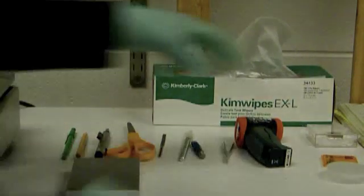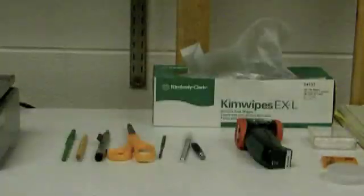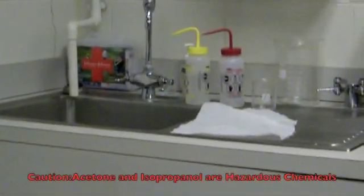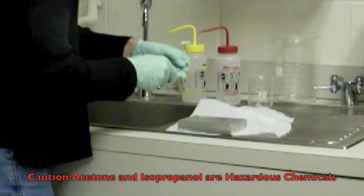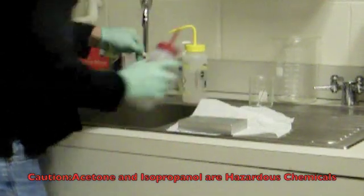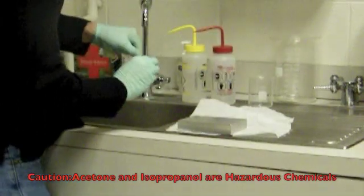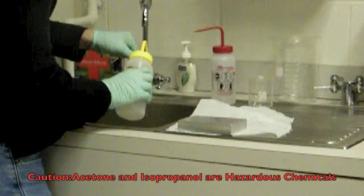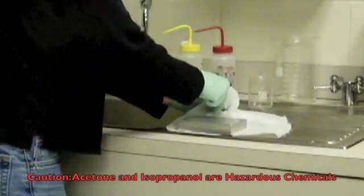Now that our hot plates and our epoxy is warmed up, we need to clean off our titanium carrier. To do that, we need to apply a few drops of acetone, scrub it with a cotton swab, and then rinse it with isopropanol. And then dry it with your Kim Wipe.